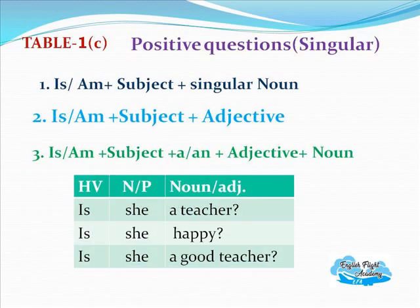Table 1c — positive questions in singular: Is/am/are + subject + singular noun. Is she a teacher? Is she happy? Is she a good teacher? Practice this as many times as possible — the more you practice, the more benefit you will gain.